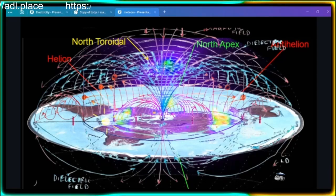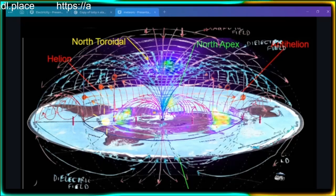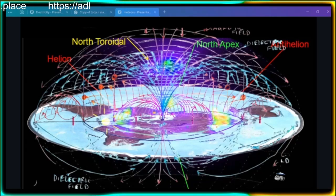Horizon dropping from eye level with altitude at a predictable rate: this is an optics effect. Everything about the horizon seeming to rise to eye level supports a flat level surface — nothing about the horizon appearing to rise to eye level at a predictable rate is supportive of curvature or a ball in any way.